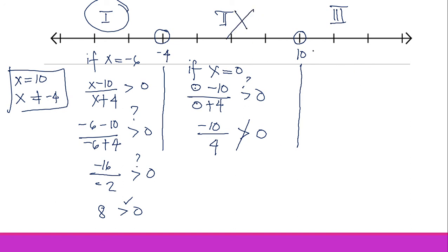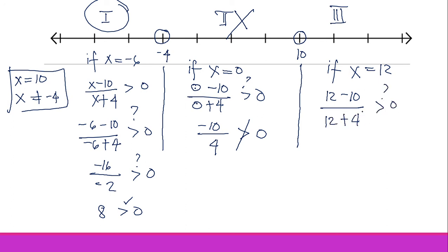For Region 3, we pick x = 12: (12 − 10)/(12 + 4) = 2/16, which is positive and greater than zero. So Region 3 is also part of the solution. Therefore, the solution includes Region 1 and Region 3.